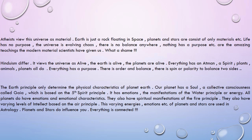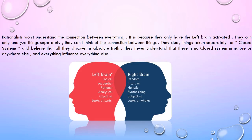Planets and stars do influence you — everything is connected. Rationalists won't understand the connection between everything because they only have the left brain activated. They can only analyze things separately; they can't think of the connections between things. They study closed systems and believe all they discover is the absolute truth, never understanding that there is no closed system in nature and everything influences everything else. Here in the picture we can see the differences between left brain and right brain functionalities.